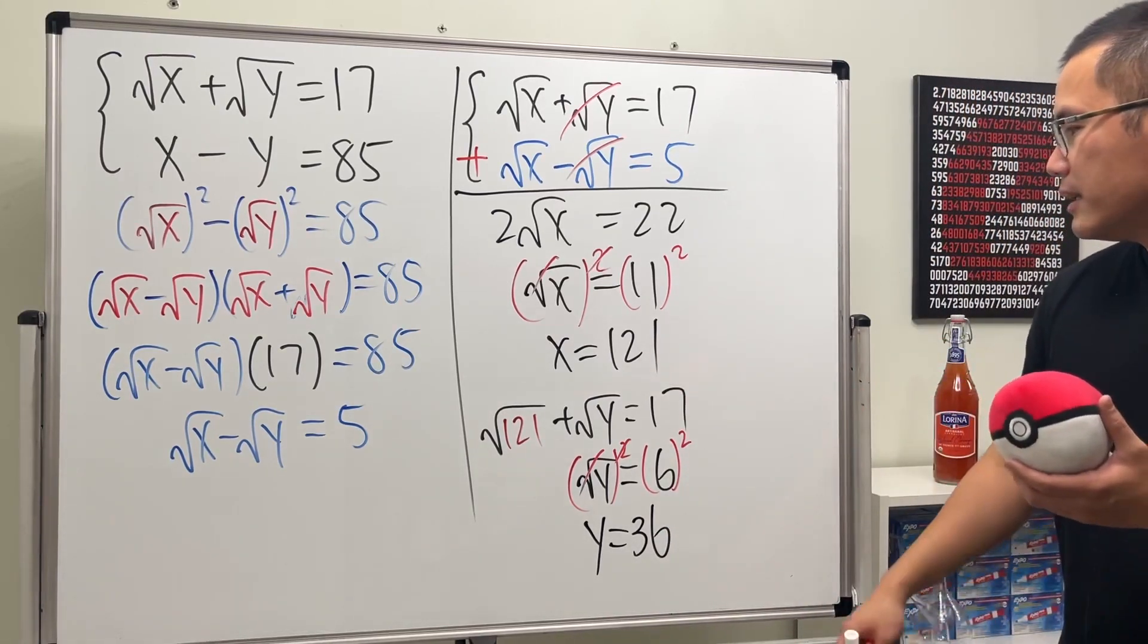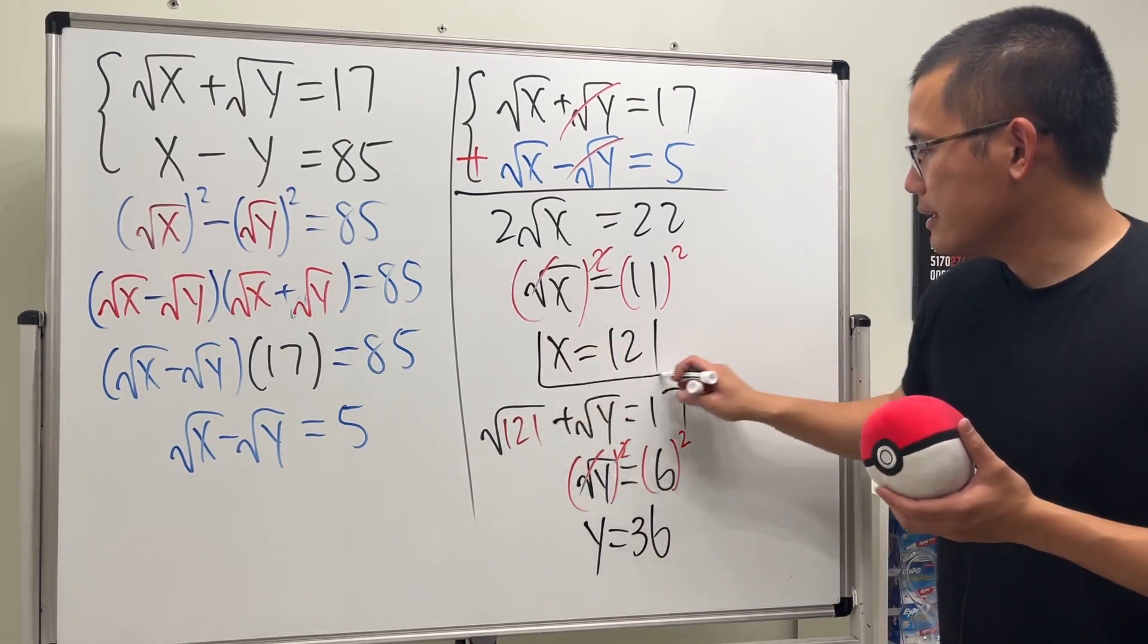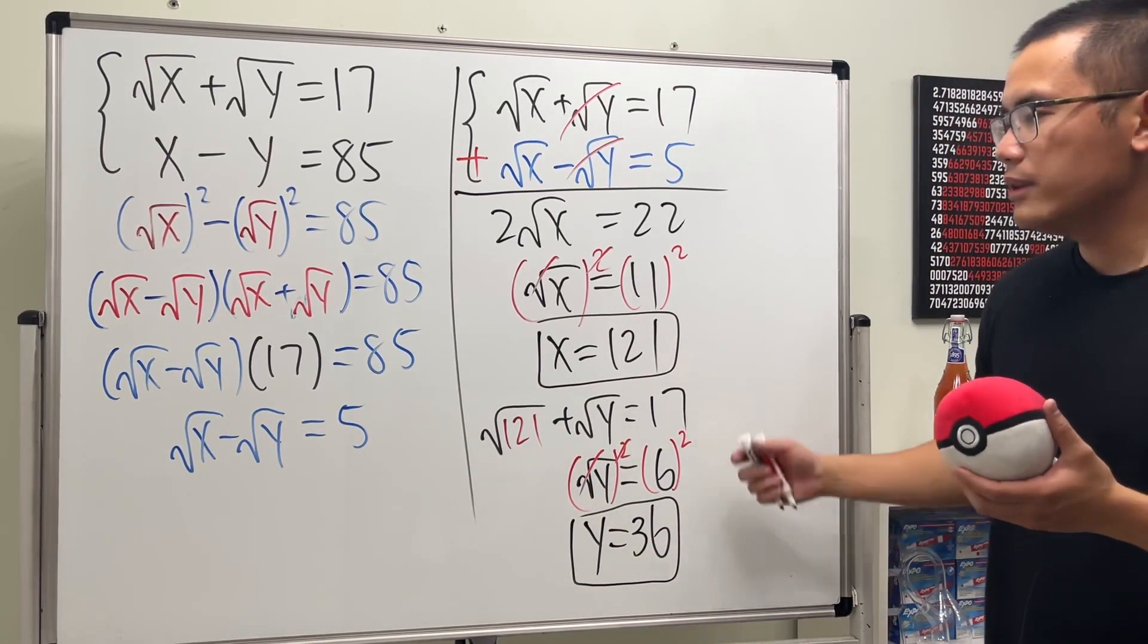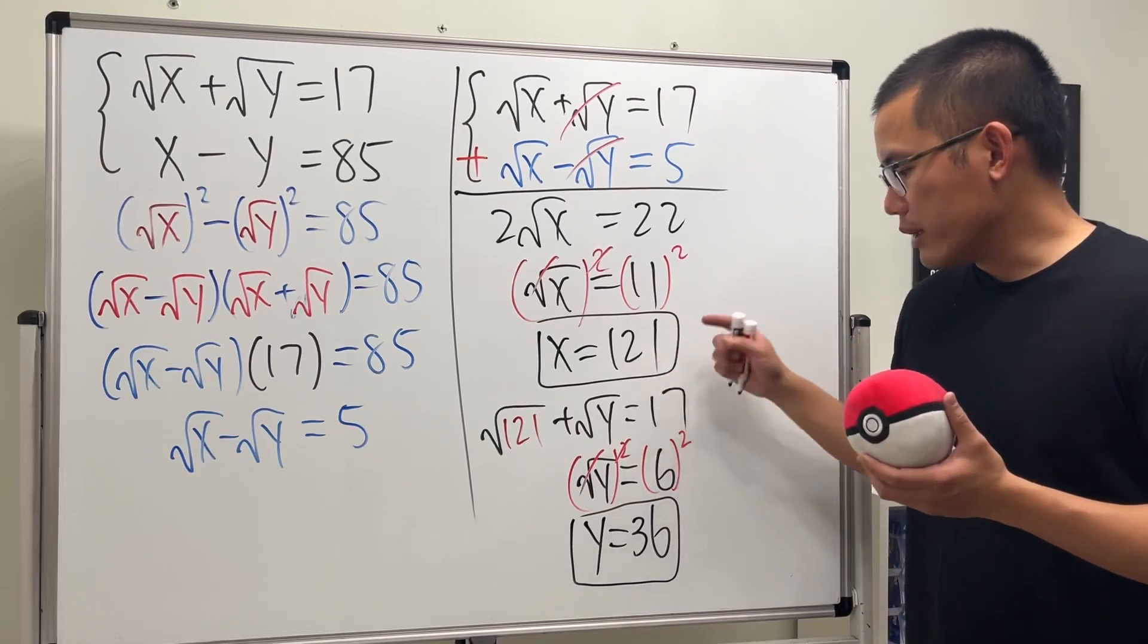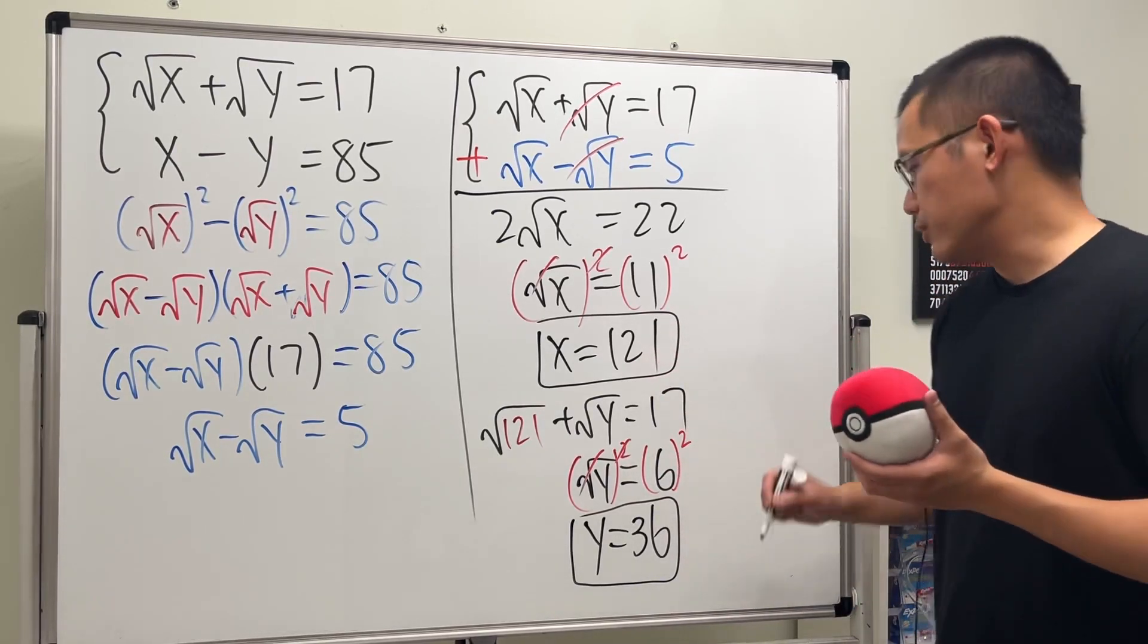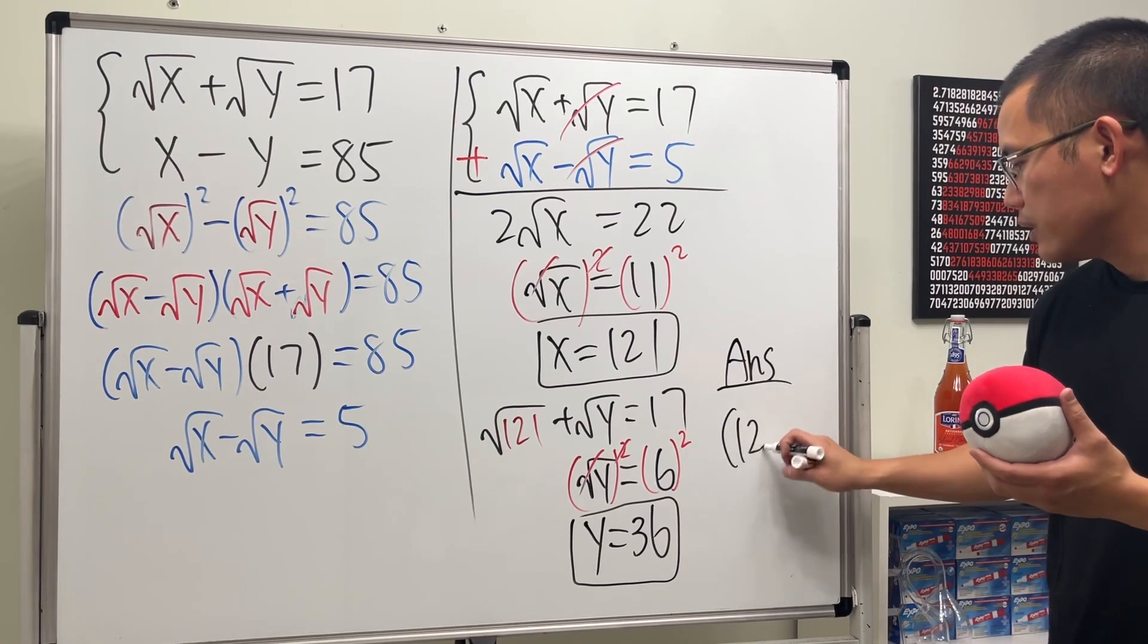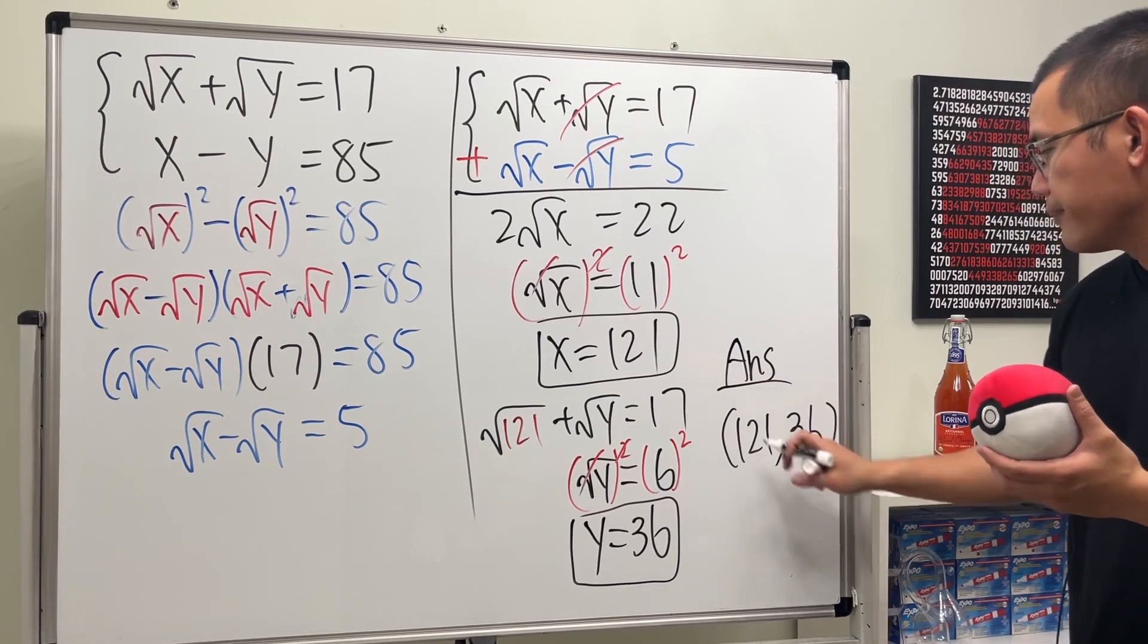So ladies and gentlemen, the answers are x is equal to 121 and y is equal to 36. And if you would like, you can also put it as (121, 36), up to you. What I mean by that is like to put it as the ordered pair (121, 36).